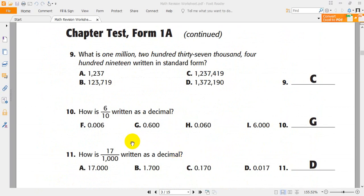Number 9. What is 1,237,419? Again, 1,237,419. 1,237,419. As you see, that C is the right answer.